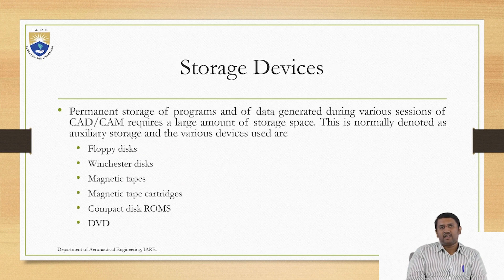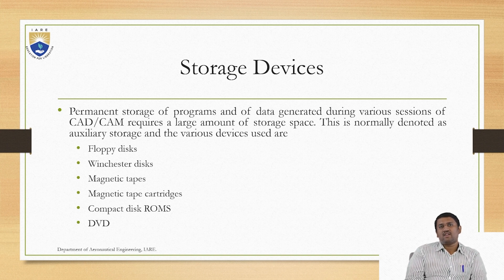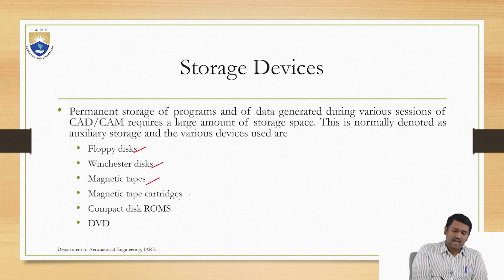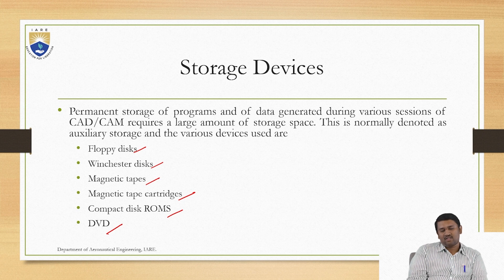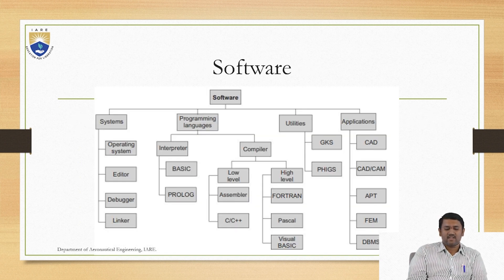How you store the data is through permanent storage — programs and data generated during various sessions of CAD-CAM require a large amount of storage space, particularly to store all versions and all data generated in the complete product lifecycle. This is normally denoted as auxiliary storage, which includes floppy disks, Winchester disks, magnetic tapes, magnetic cartridges, compact disks, as well as DVDs. All these are portable auxiliary memories that can be carried by the user to transfer data from one hardware system to another.